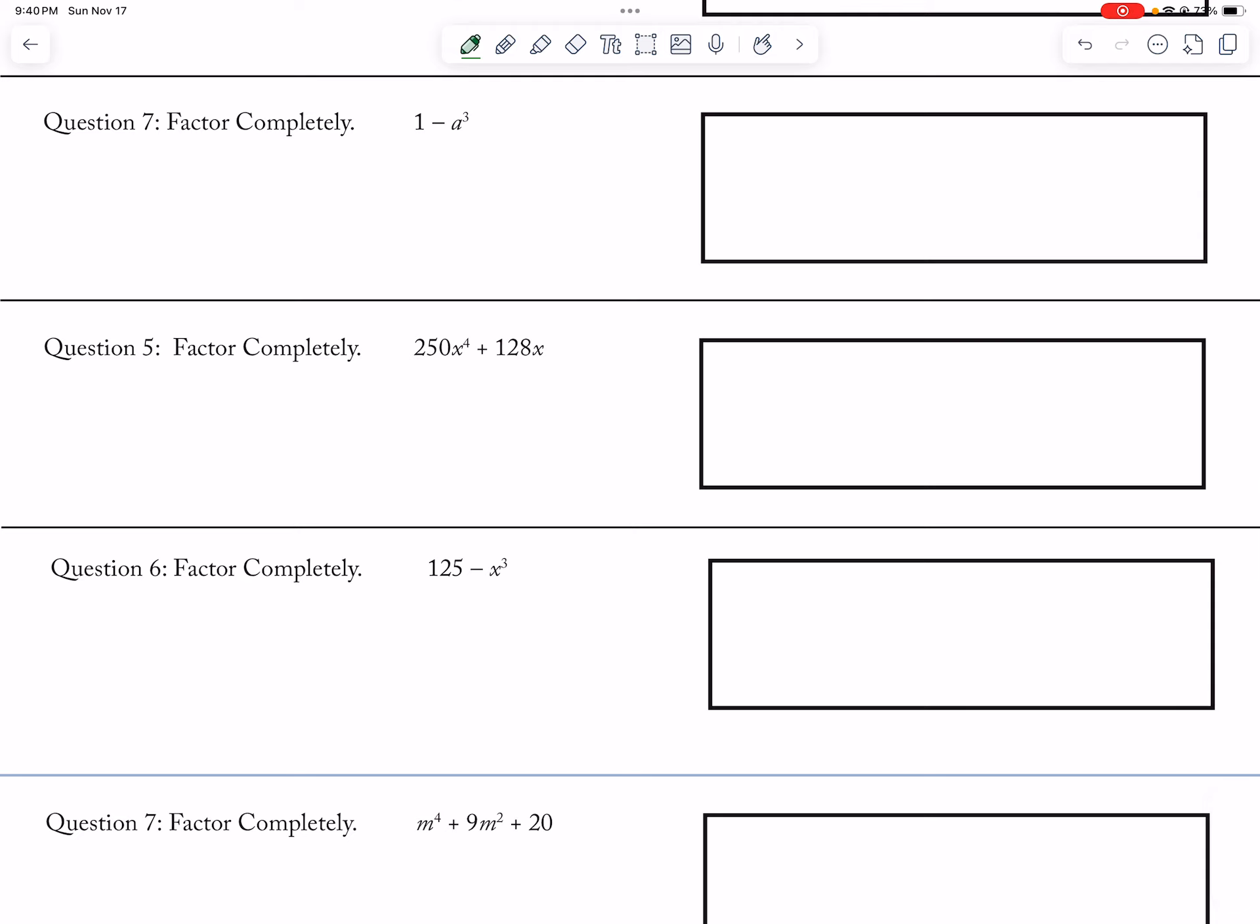Okay, so then 128. I can factor out a 2x, and I'm left with 125x cubed and 64. This is the sum of cubes, so 2x, 5x plus 4, 25x squared plus 20x plus 16.